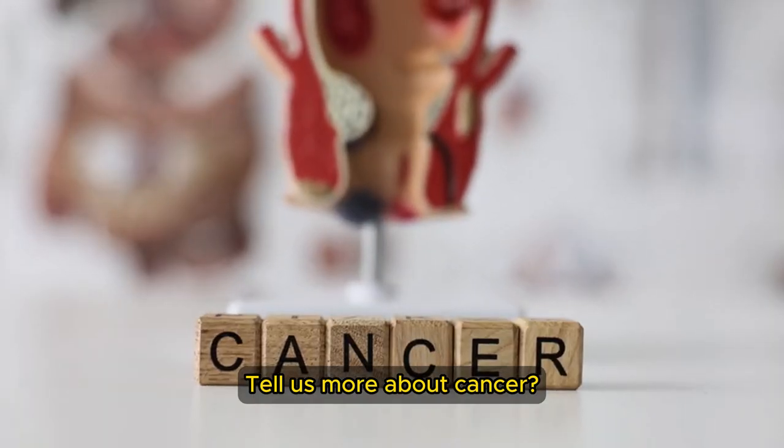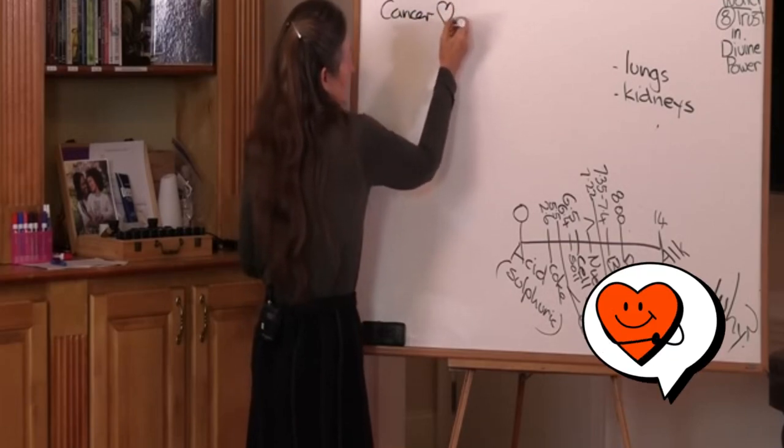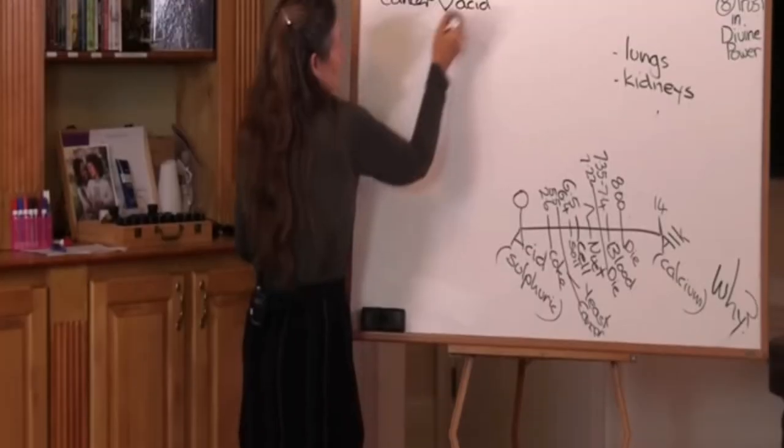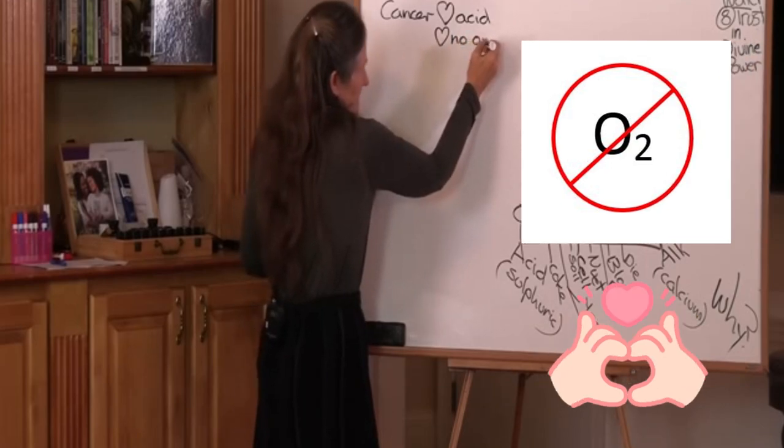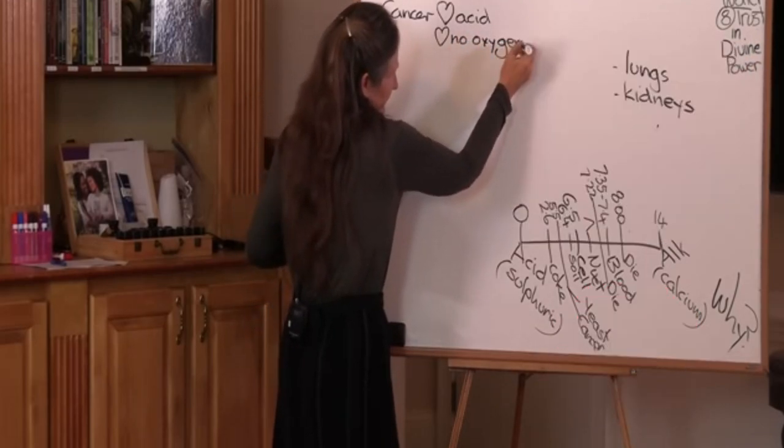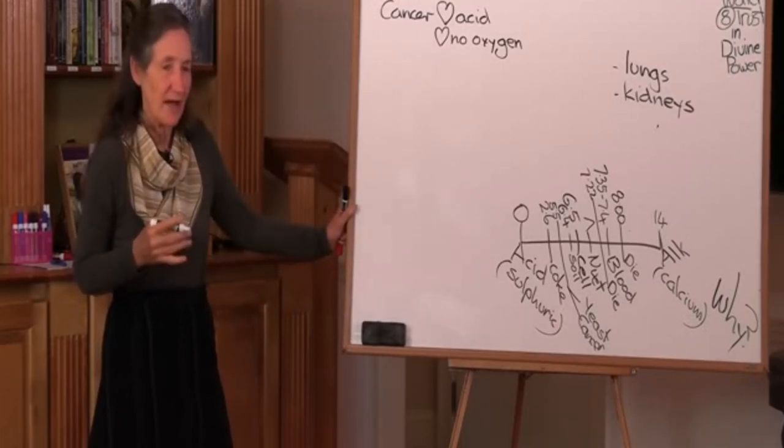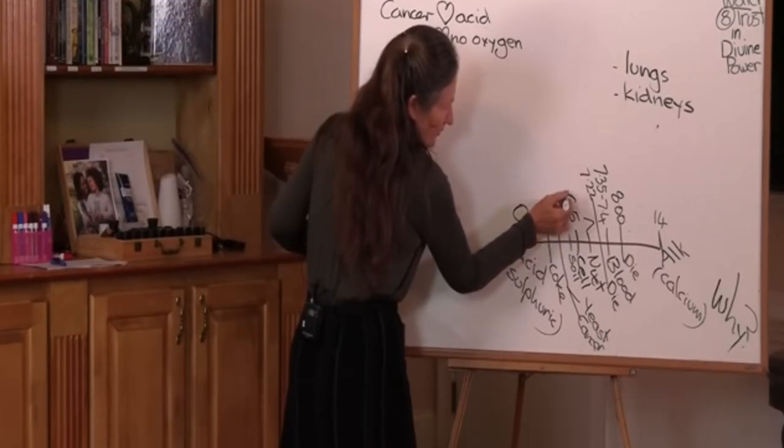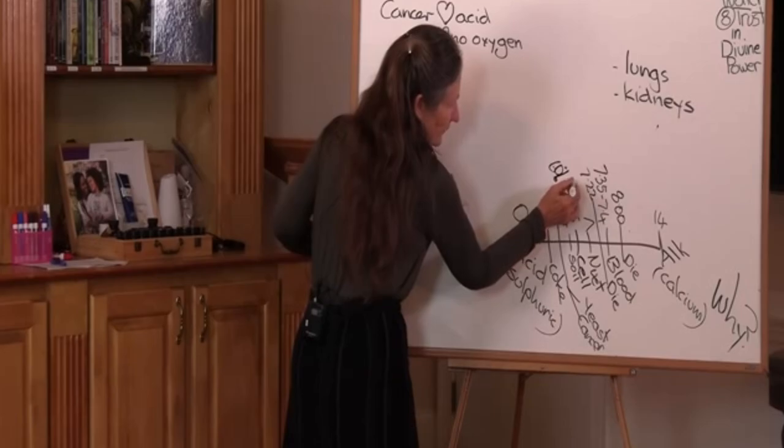Tell us more about cancer. Cancer loves acid. Anything else that cancer loves? Cancer also loves no oxygen. So knowing those things, it makes a lot of sense to alkalize the tissues. And even though there's the drop of only one point, the drop of one point means 60% less oxygen available at the cellular level.